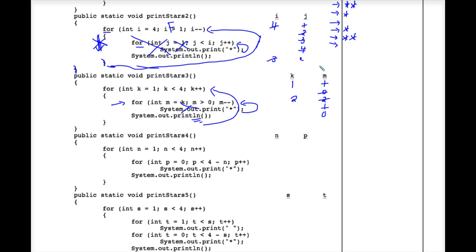We hit the curly brace and come back to the top. k++ brings k to 3. 3 is still less than 4, so we execute the inner for loop again as if we've never seen it before. m is redeclared as k, and k is currently 3. 3 is greater than 0, so we print a star, m--, print another star, m--, print another star, m-- to 0. 0 is not greater than 0, so we're finished here. We print ln and the cursor drops down.